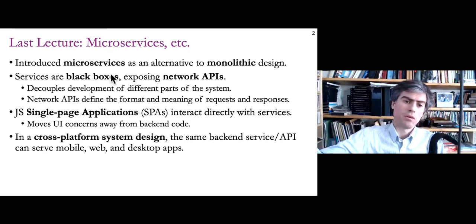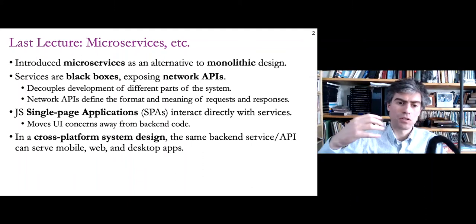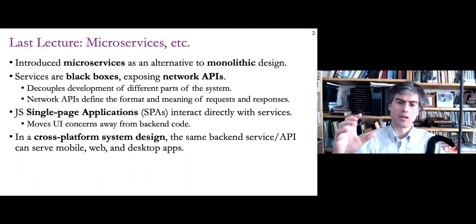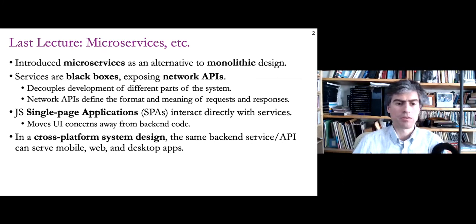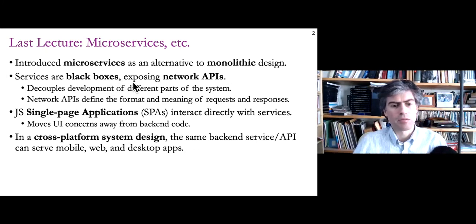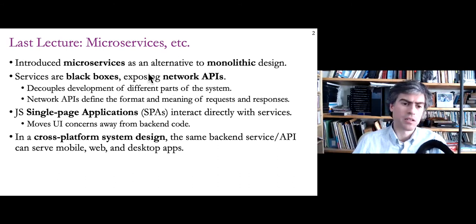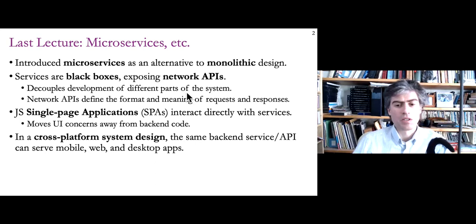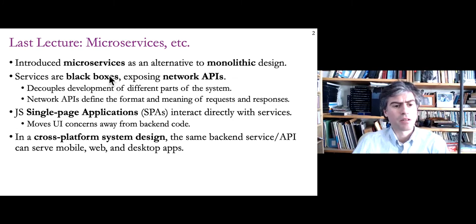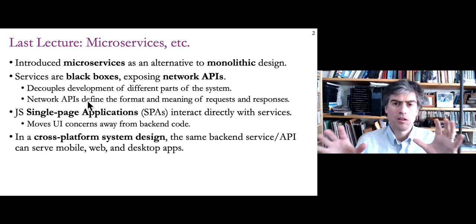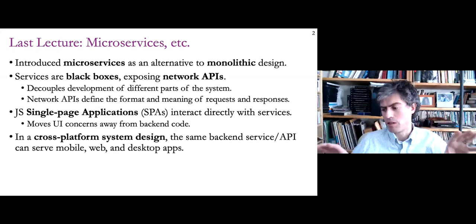Generally your client, the outside user, will still connect to just one service, but a lot of the work is done by making requests to other microservices inside. These microservices, like any service, are black boxes — they expose network APIs and the services that interact with them don't need to know too much about what's happening internally. They can be coded in different languages. By breaking your service into microservices, you can decouple development so teams can work on different parts in parallel.